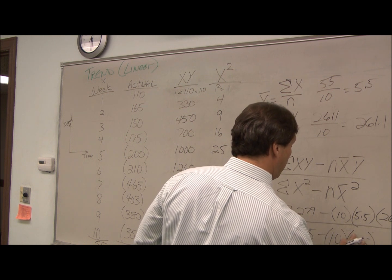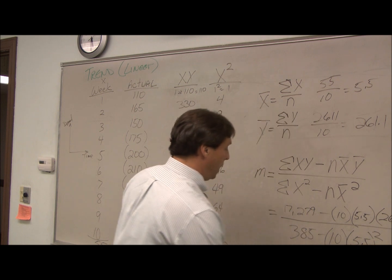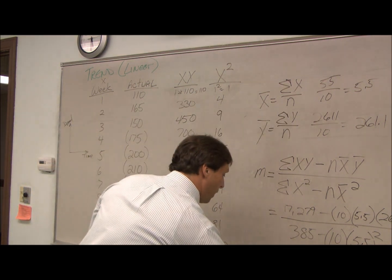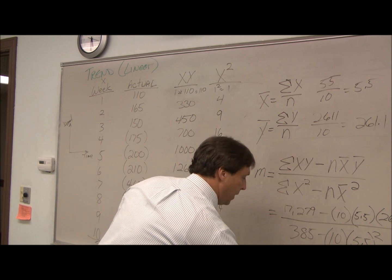Oops, 5.5 squared. Sorry about that. And we do that out, and we get a slope of 35.37.